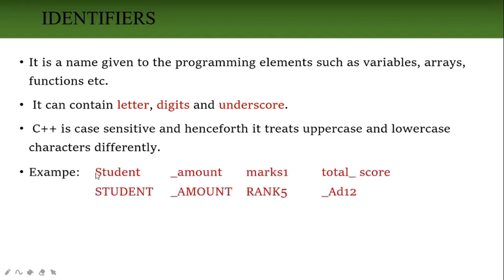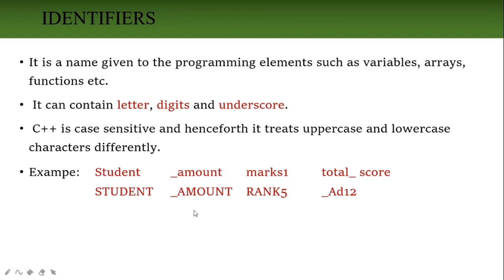For example, 'Student' written with uppercase S and 'student' written with lowercase s are two different identifiers — both are not the same in C++. Similarly, '_amount' starting with underscore is valid. An identifier may not start with a number. 'amount' with lowercase and 'AMOUNT' with uppercase are two different identifiers. We can also use numbers like mark1, rank5 — these are valid identifiers.